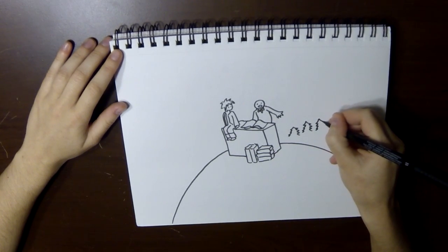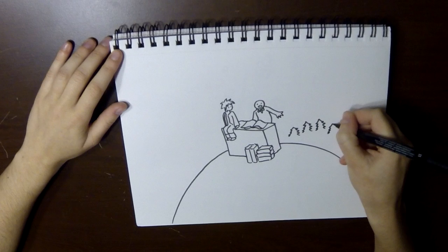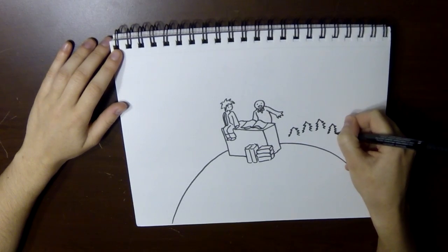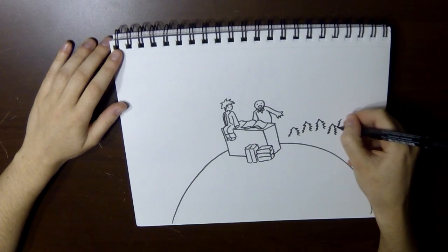I also have a flower. We don't record flowers, the geographer said. Why not? It's the prettiest thing. Because flowers are ephemeral. What does ephemeral mean?